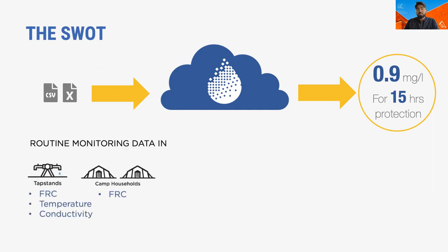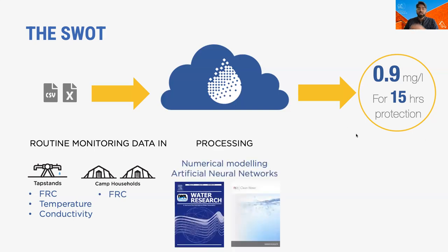The SWOT requires a minimum of 100 paired samples to provide an accurate FRC recommendation for a site. Each paired sample consists of a timed measurement of FRC at the tap stand and optionally water temperature and conductivity, followed by a second measurement of FRC for the same water at the household after a set period of time. The SWOT takes this data, models the chlorine decay, and provides the FRC target for tap stands that will provide adequate protection for the specified household storage time. The SWOT uses two analytical engines running in parallel: numerical modeling of chlorine decay, as well as a machine learning approach based on artificial neural networks, or ANNs.